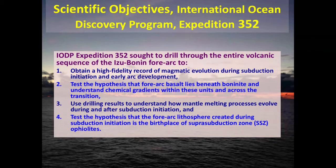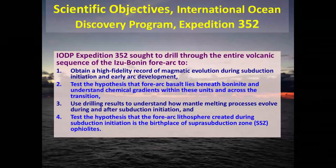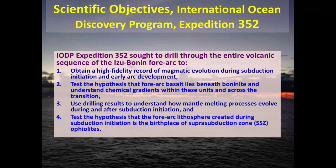All IODP expeditions have a set of scientific objectives worked out in an expedition proposal, refined through a review process, and these become the core drivers for what happens on the ship and in post-cruise science. For IODP Expedition 352, the four key objectives were: obtain a high-fidelity record of magmatic evolution during subduction initiation and early arc development; test the hypothesis that forearc basalt lies beneath boninite; understand mantle melting processes during subduction initiation; and test the hypothesis that forearc lithosphere is the birthplace of supra-subduction zone ophiolites.